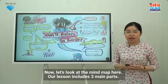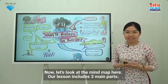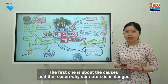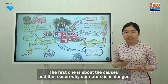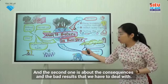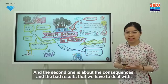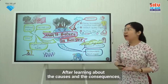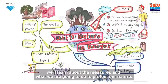Now, let's look at the mind map here. Our lesson includes three main parts. The first one is about the causes and the reason why our nature is in danger. The second one is about the consequences and the bad results that we have to deal with. After learning about the causes and the consequences, we'll learn about the measures and what we are going to do to protect our nature.